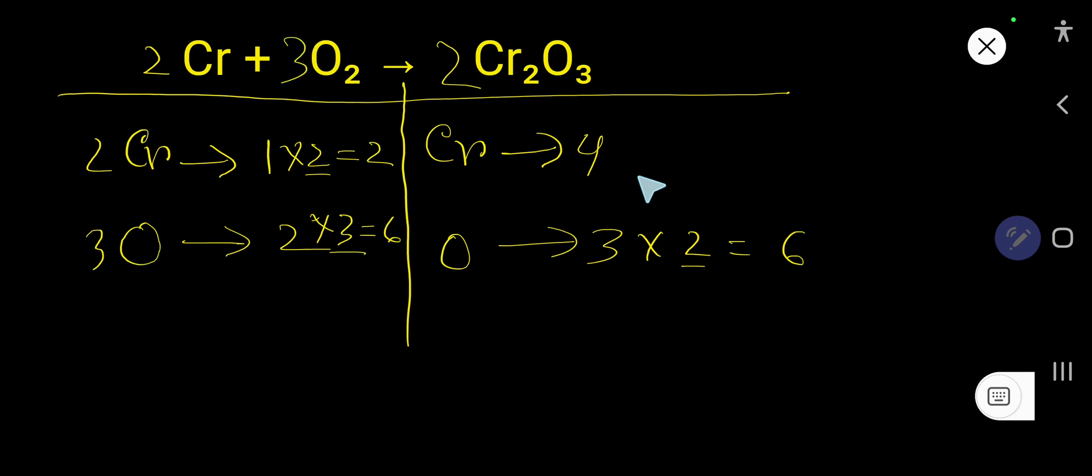So here chromium is 4, here 2. So to balance chromium you can multiply here by 2 that gives you 4. If you multiply by 2, these 2 must come before this chromium, that is here. So 2 times 2 gives you 4.